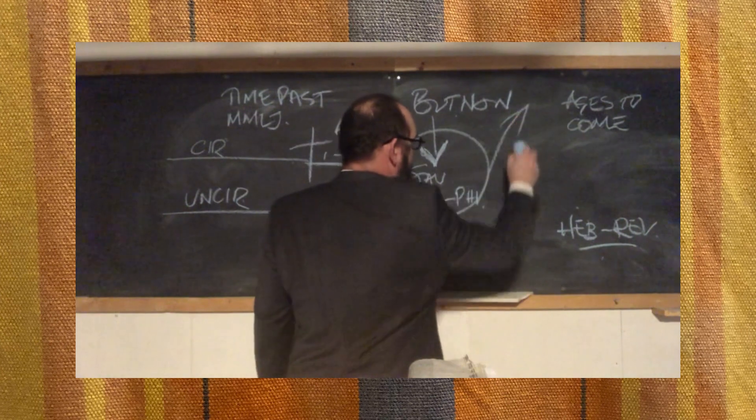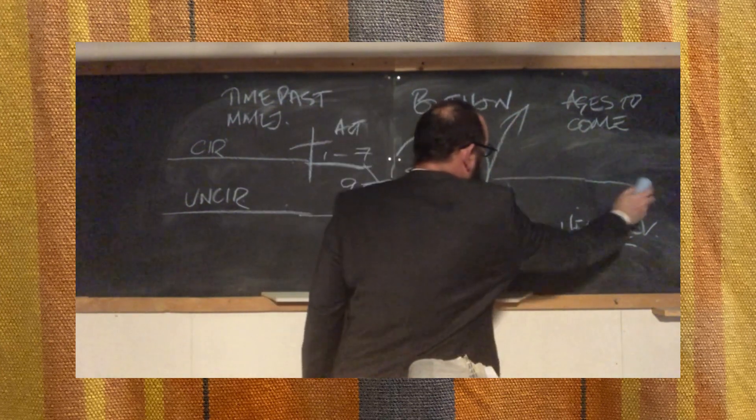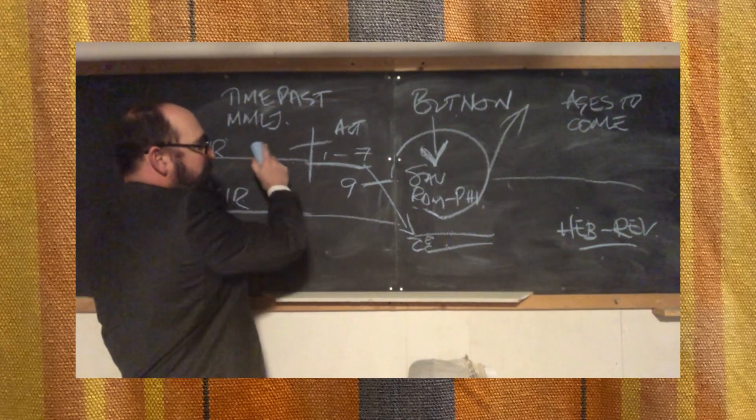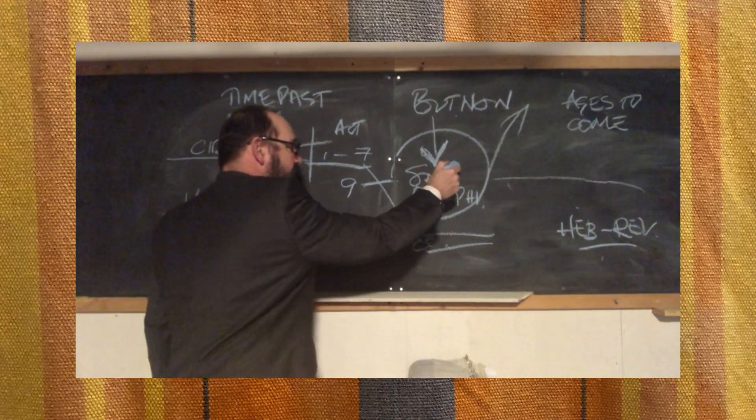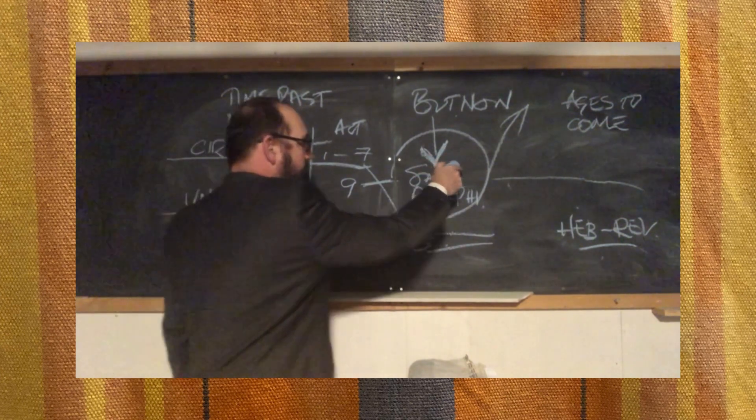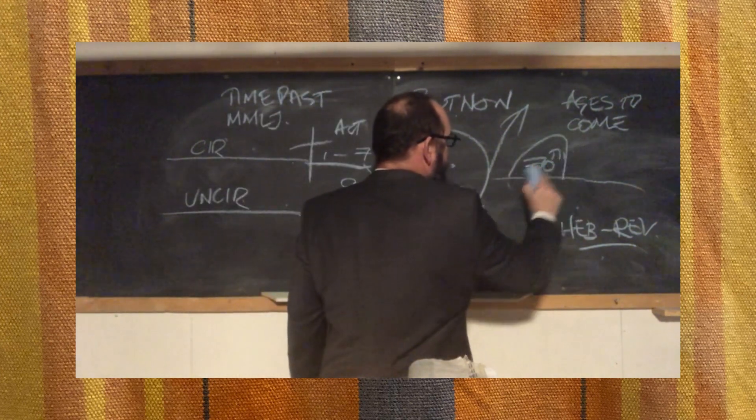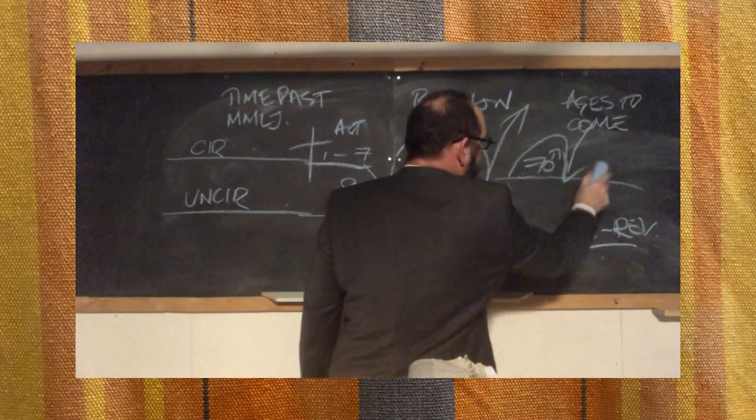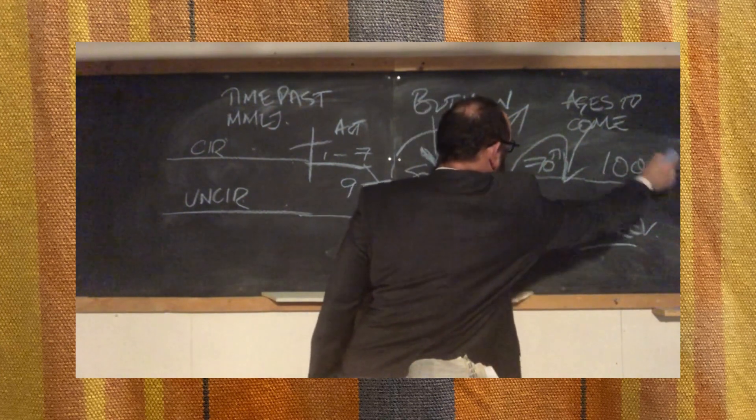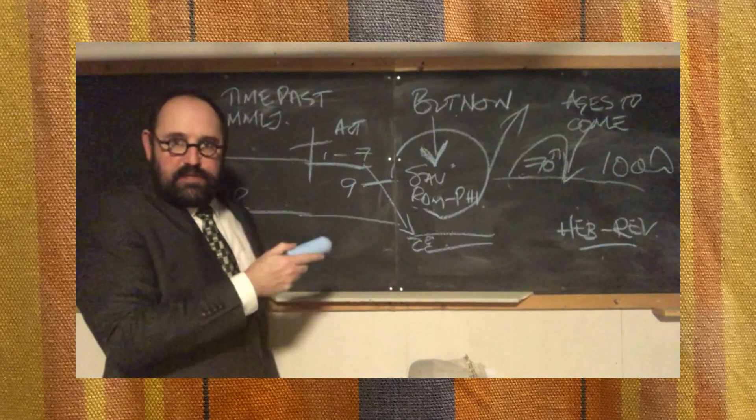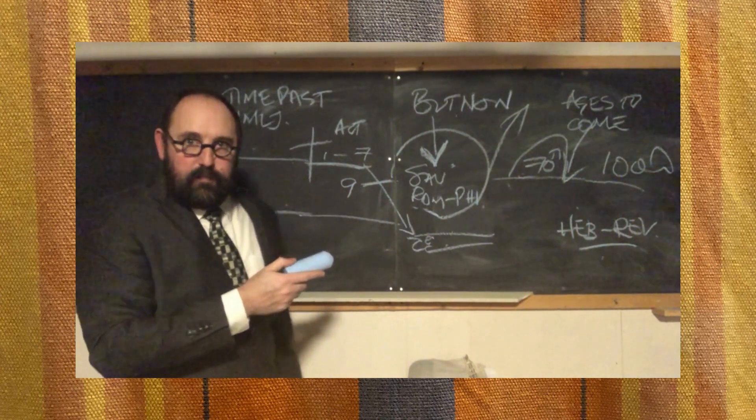Out here in the ages to come, Hebrews to Revelation. When the church, the body of Christ, gets raptured out, the prophetic program takes off where it left off. This is the prophetic program here. This is the mystery. The unprophesied time. Out over here, you've got Daniel's 70th week, the second coming of the Lord Jesus Christ, and then the thousand-year kingdom. That's big picture stuff.